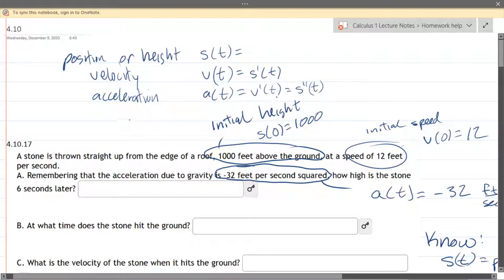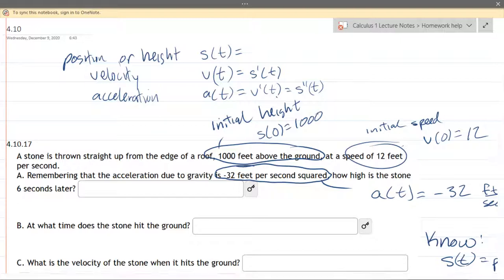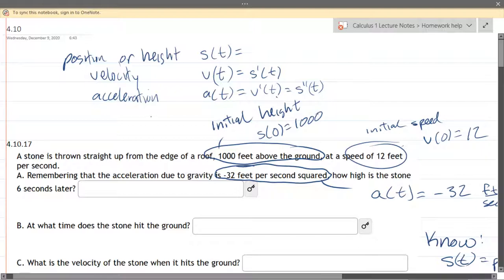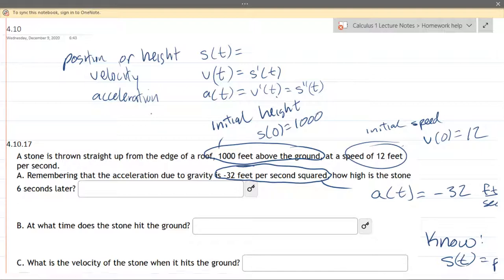Okay they do mention acceleration. Acceleration is not changing, gravity is constant and it's negative 32 feet per second squared. Now technically the further away you get from Earth the less gravity pulls but a thousand feet above the ground is going to make no difference so we're treating gravity as constant.